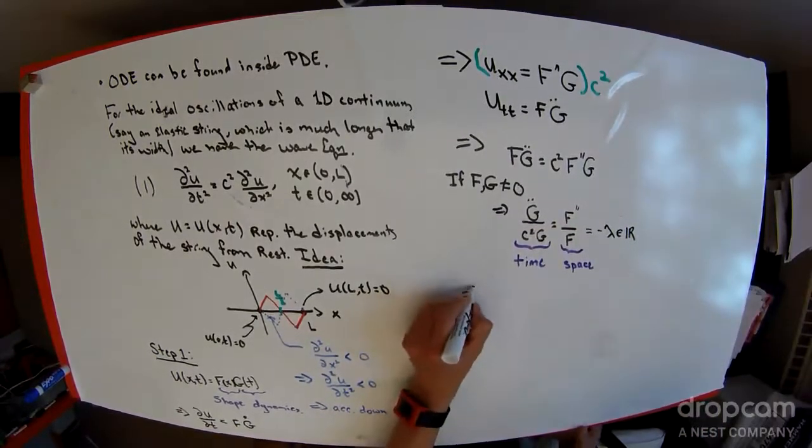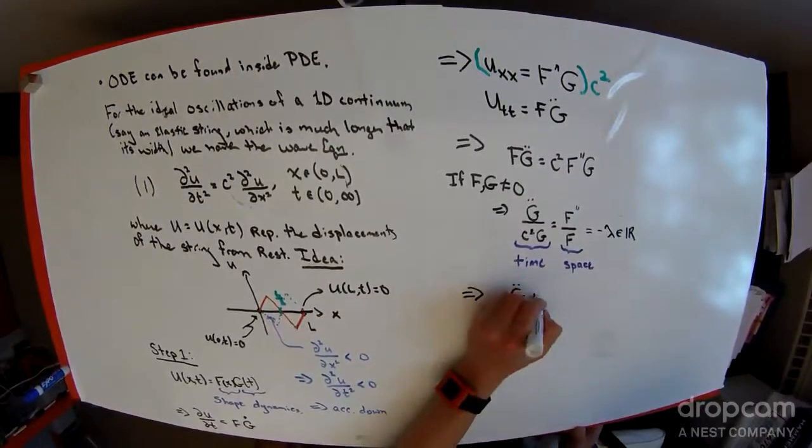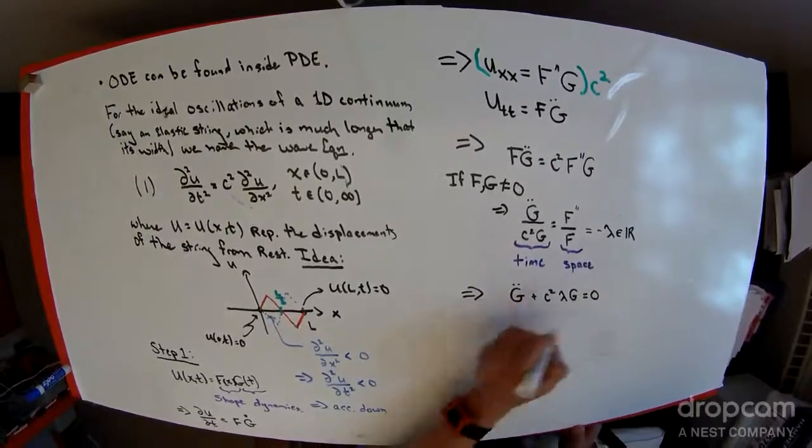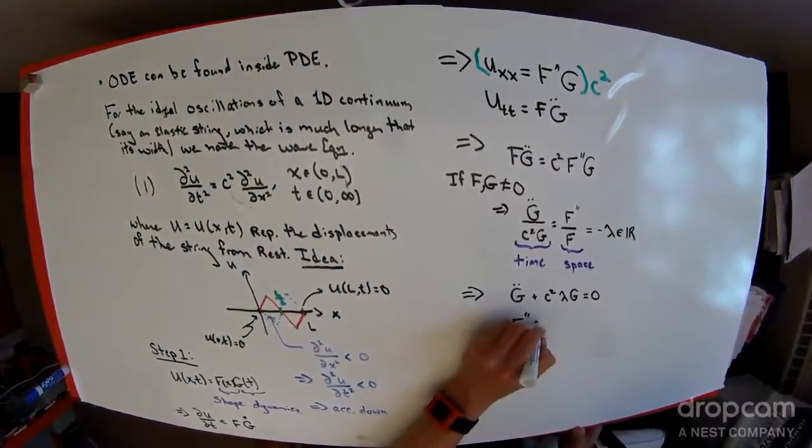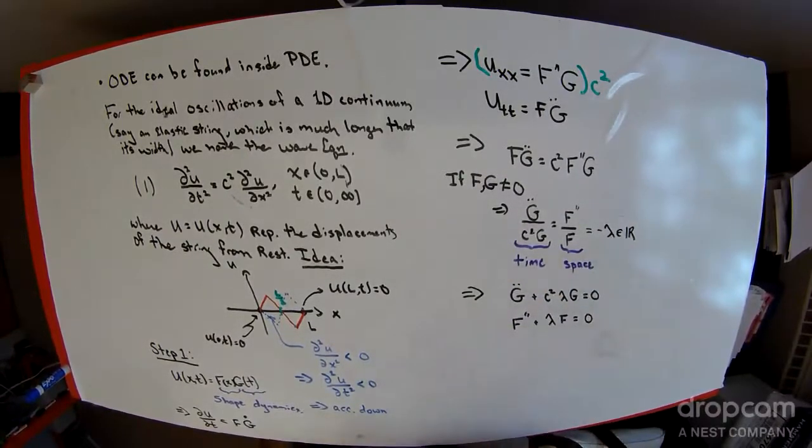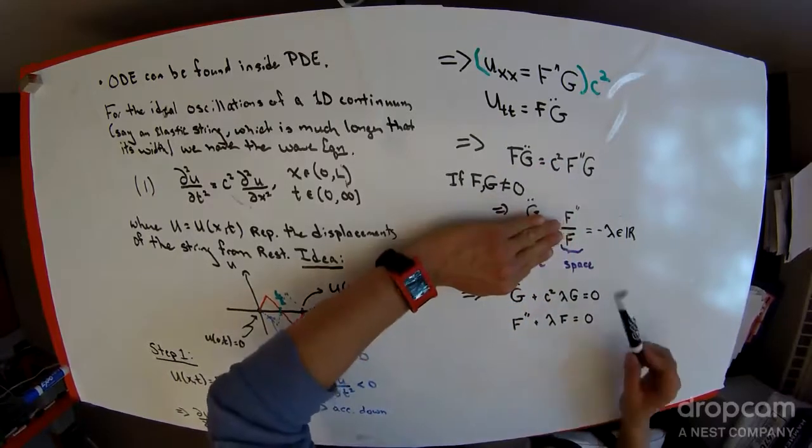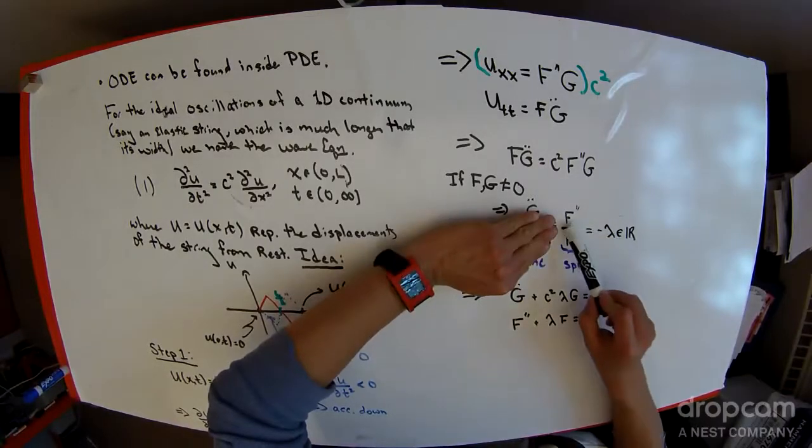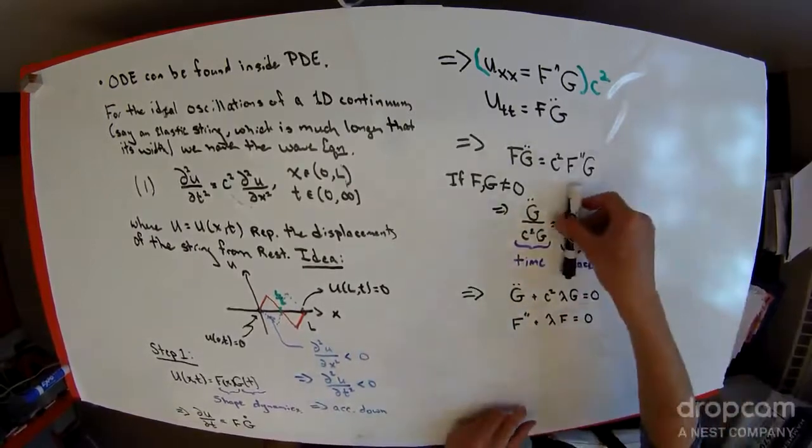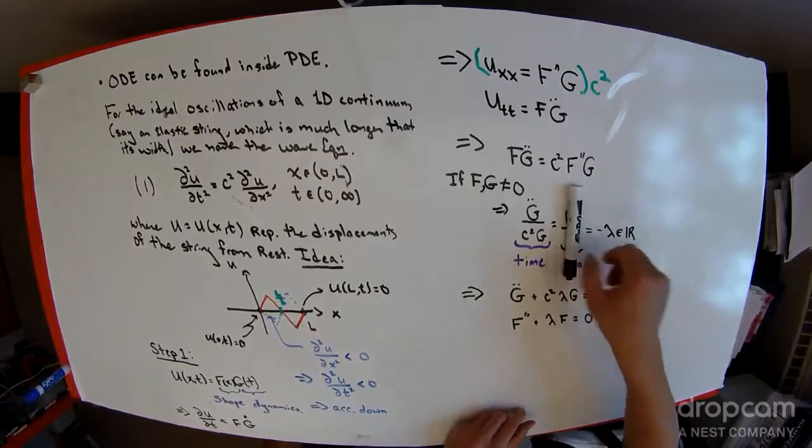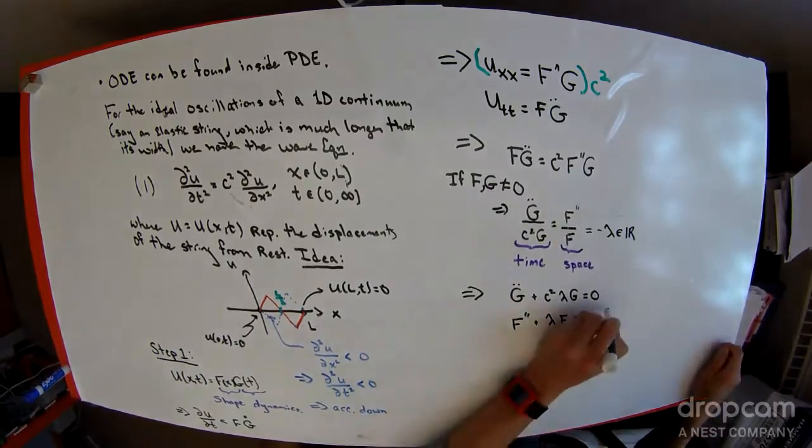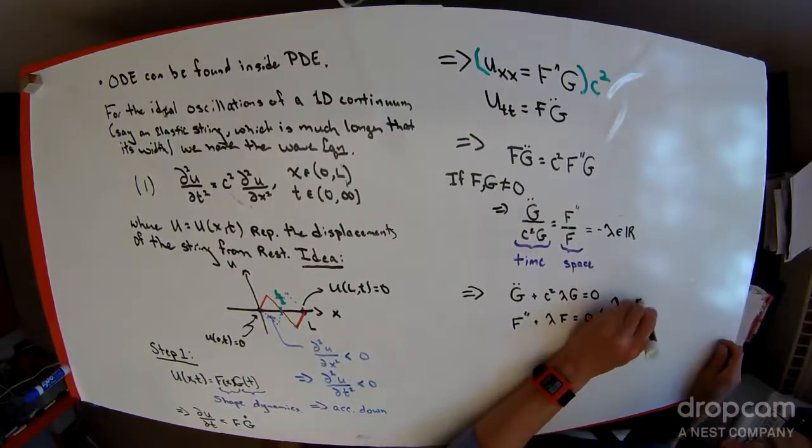What we get here is an equation g dot dot plus c squared times lambda g equals zero and f double prime plus lambda f equals zero. We get to these two equations by treating, to get to the f equation, we cover this time equation up and multiply the f over to the right-hand side. Covering this part up, I multiply c squared g over to the right and bring everything over.